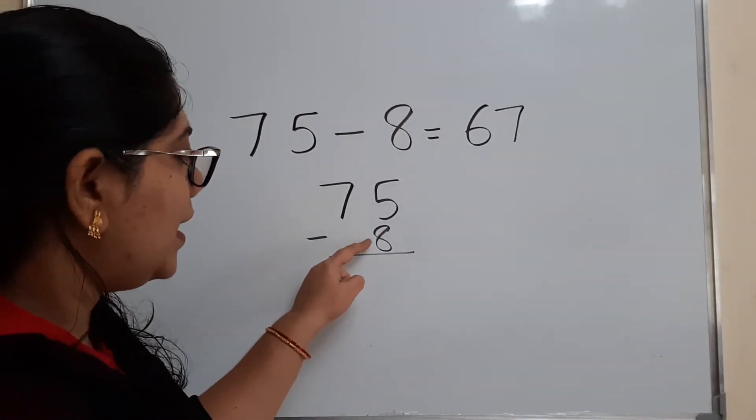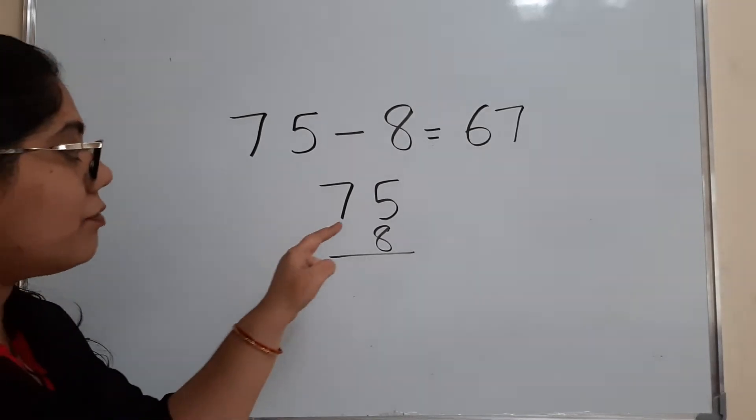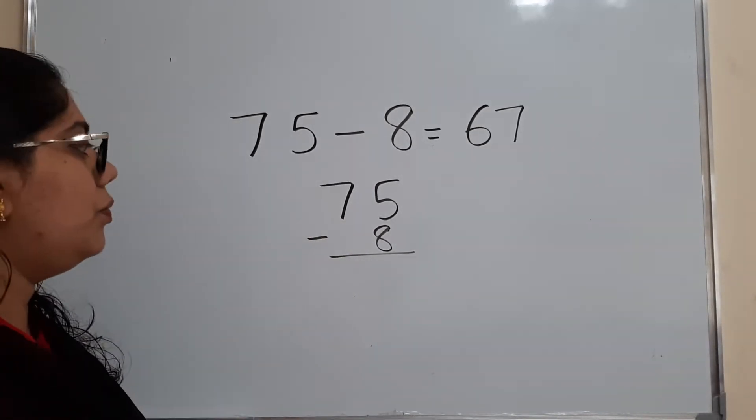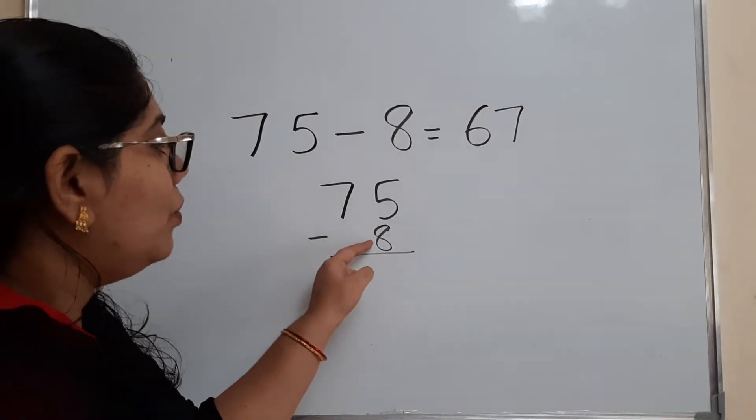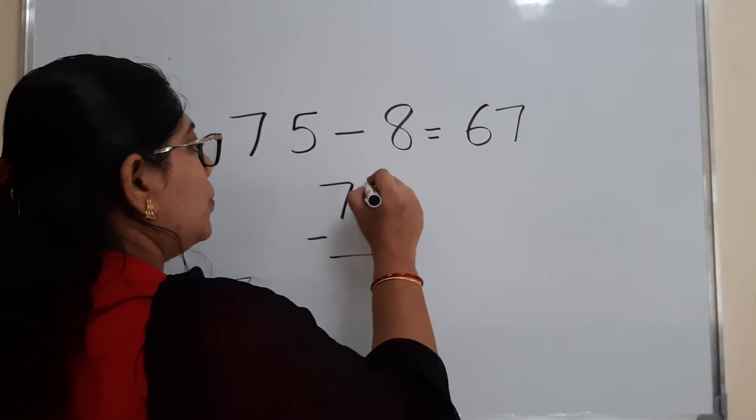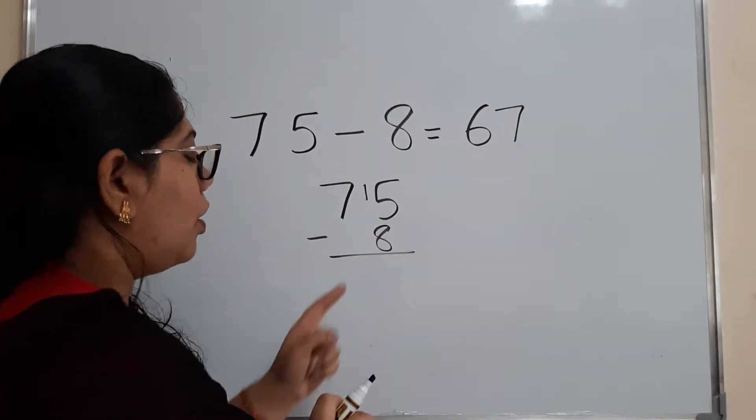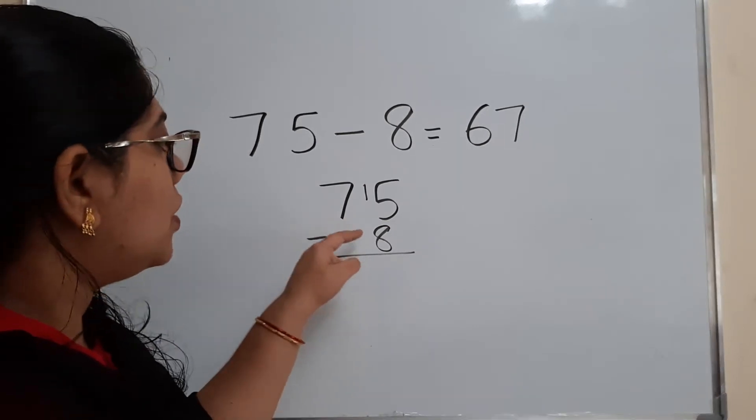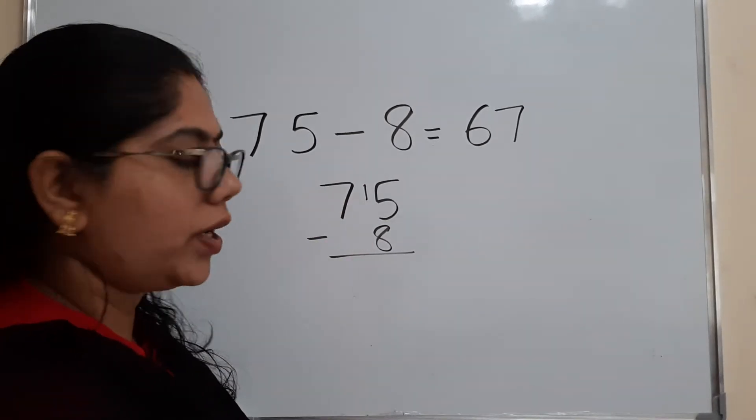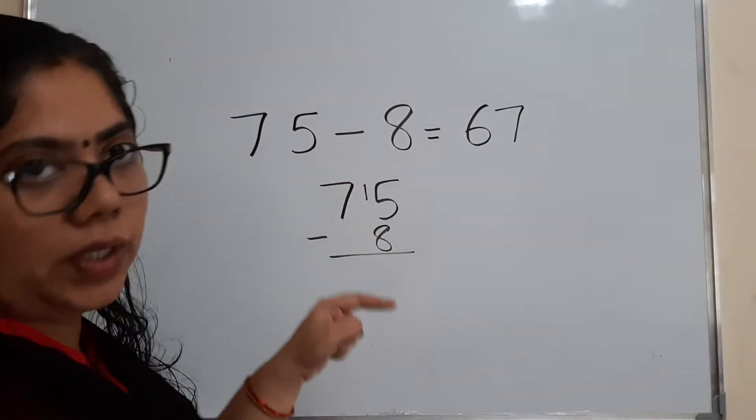75 minus 8. So here, 8 is greater than 5. If the 8 is greater than 5, then what you want to do is you want to think of a number which you will get more than this. So this will become 15, not 5. Normally in the carry also, we will cut and do. But instead of that, we will do in this method.